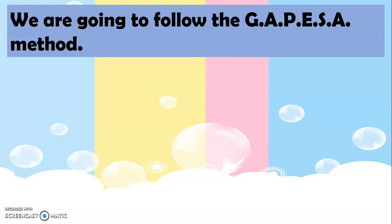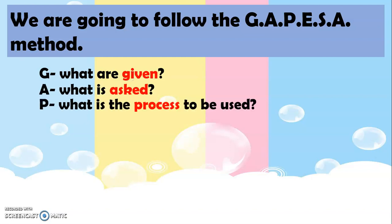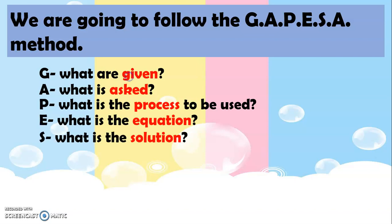To find out the answer, we are going to follow the GAPESA method. G stands for what are given, A is what is asked, P is what is the process to be used, E is what is the equation, S is what is the solution, and A is what is the answer.